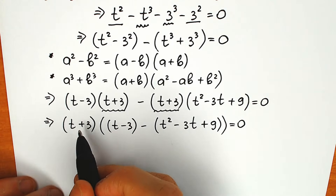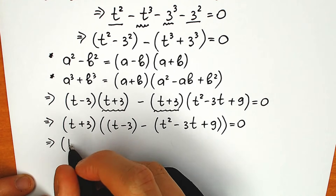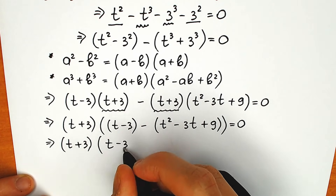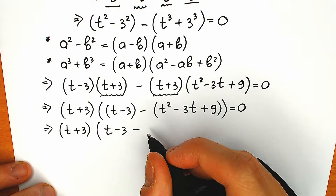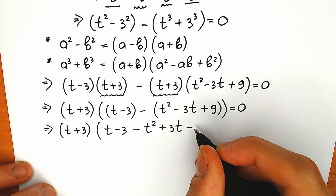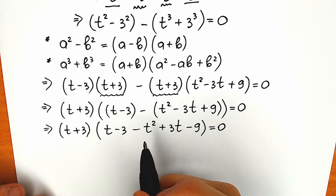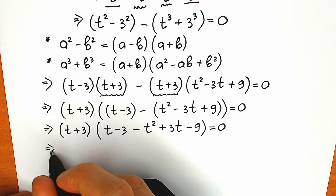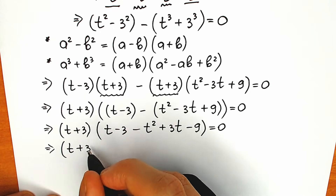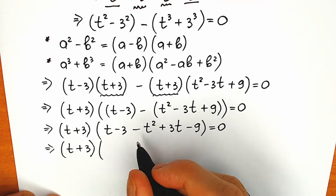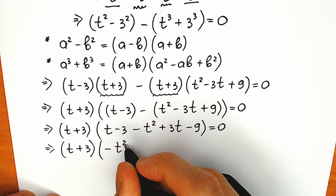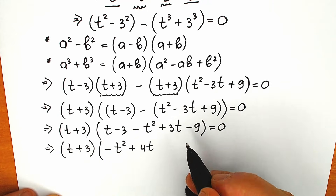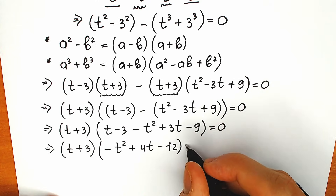Let's simplify the bracket. Expanding gives us t minus 3 minus t squared plus 3t minus 9. Rearranging in standard order: minus t squared plus 4t minus 12. Multiplying by minus one to get a classic order: t squared minus 4t plus 12. So we have (t plus 3)(t squared minus 4t plus 12) equal to zero.